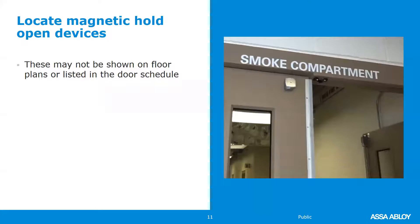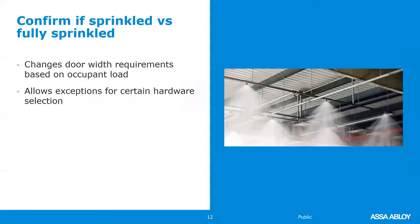The location of magnetic hold-open devices may not be shown on the door schedule, but they should be shown on the life safety plan — it could be a symbol, a note, or just initials. Additionally, confirm if the building is sprinklered or fully sprinklered or not: it changes your door width requirements based on the occupant load and also allows for exceptions for certain hardware selection, such as delayed egress and other special locking arrangements.